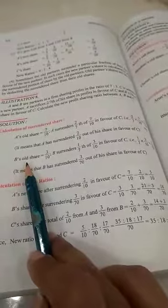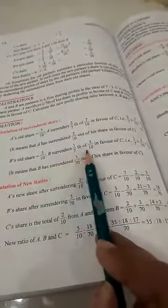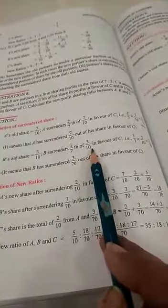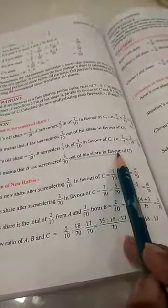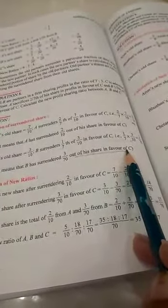Likely, B's old share is 3/10. B surrenders 1/7 of his share as it is given in the statement. So he will surrender 3/70. It means B surrenders 3/70 out of his share in favor of C.